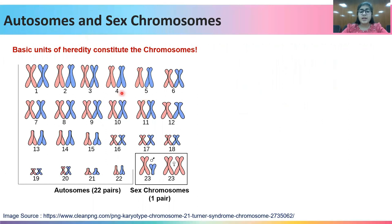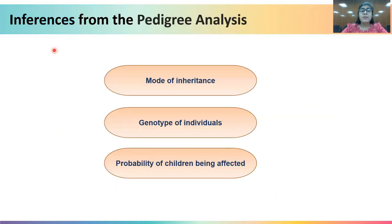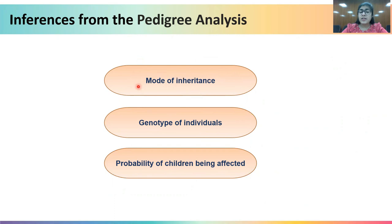Human beings contain 22 pairs of autosomes and one pair of sex chromosomes. Females have 22 pairs of autosomes plus XX, whereas males have 22 pairs of autosomes plus XY chromosomes. There can be three kinds of inferences from pedigree analysis: first, the mode of inheritance; second, the genotype of individuals; and third, the probability of children being affected. The latter two are based on the mode of inheritance.